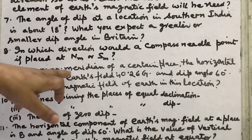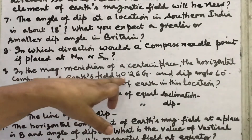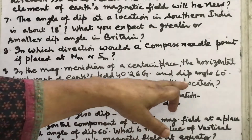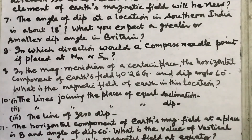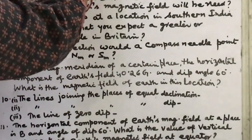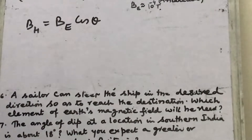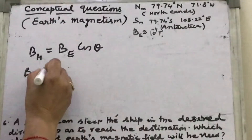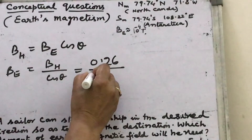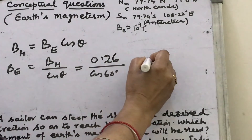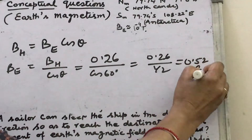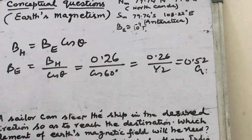Ninth question: in the magnetic meridian of a certain place, the horizontal component of Earth's magnetic field is 0.26 gauss and the dip angle is 60 degrees. What is the total magnetic field BE at this location? Since BH equals BE cos theta, we get BE equals BH divided by cos theta. That is 0.26 divided by cos 60, which is 0.26 divided by 0.5, giving BE equals 0.52 gauss.